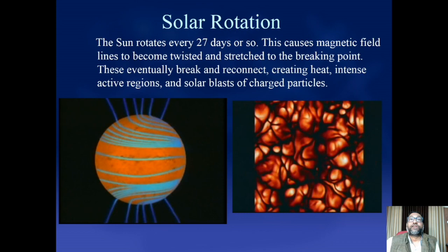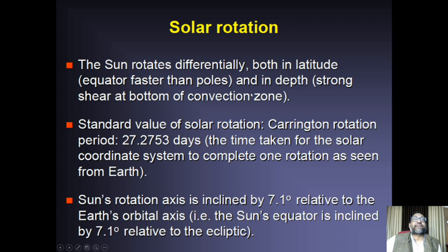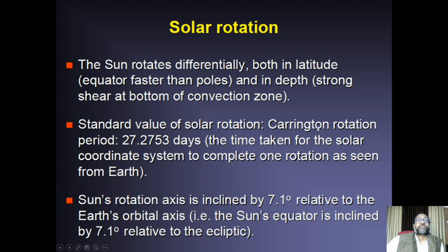The sun rotates differentially both in latitude — equator faster than the poles — and in depth as well. The standard value of solar rotation, also known as Carrington rotation, is about 27 days. There's also an interesting aspect: the sun's rotation axis is inclined by 7.1 degrees relative to Earth's orbital axis. This makes solar observations and calculations somewhat more complicated.